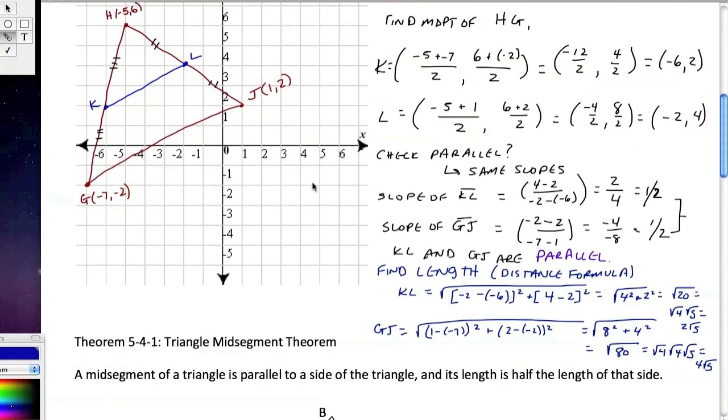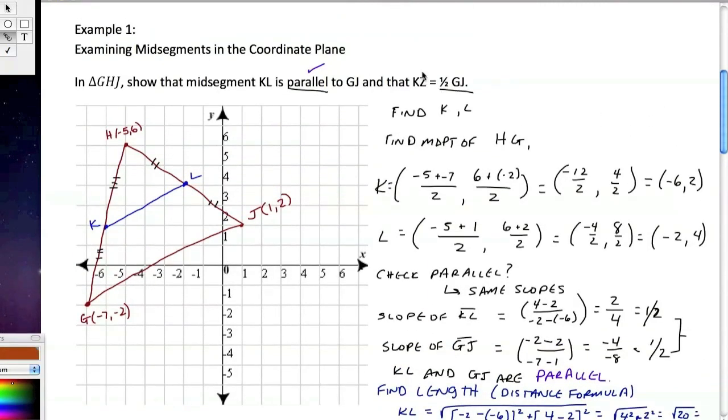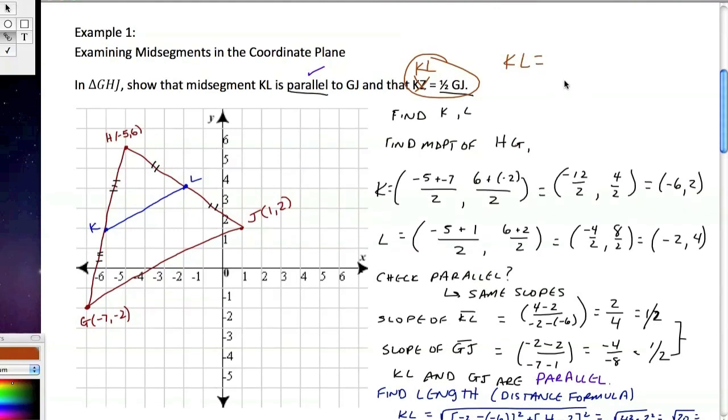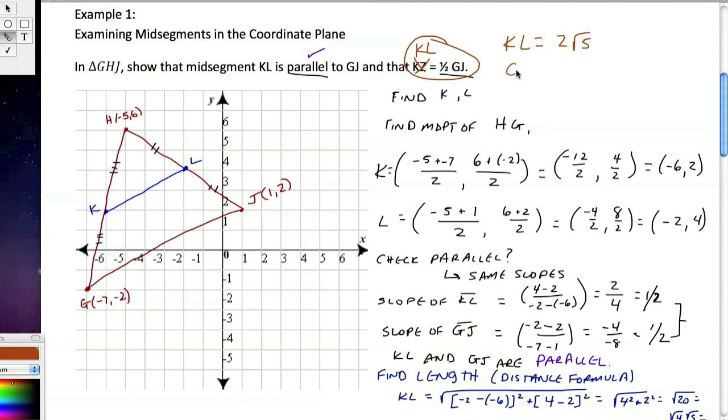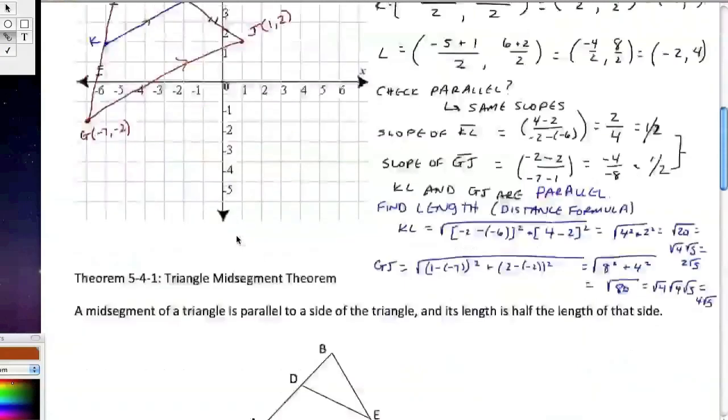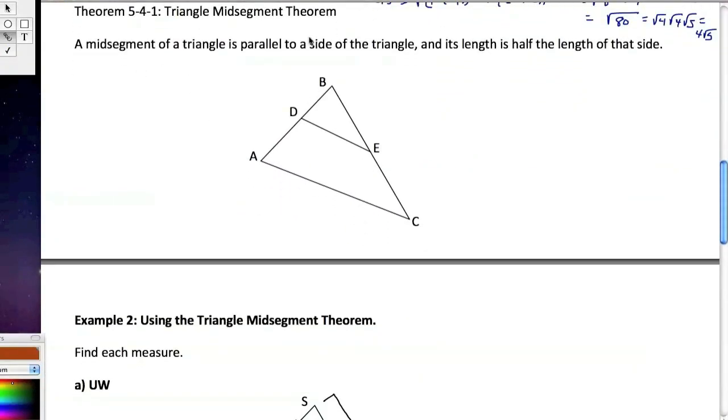I know I'm getting small here. And basically, what we want to check is to see if KL is 1 half GJ. Well, KL is equal to 2 square root of 5, and GJ we found to be equal to 4 square root of 5. So look at this - this is half as much. What did we just do there? We proved that these lines were parallel, and that KL was half as long as GJ. That's our theorem - that's our midsegment theorem. The midsegment of a triangle is parallel to a side of the triangle, and its length is half the length of that side. So DE is parallel to AC, and DE equals half AC. That's what this theorem says, and that's what we're doing here.